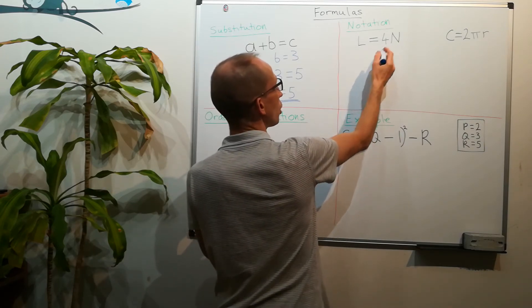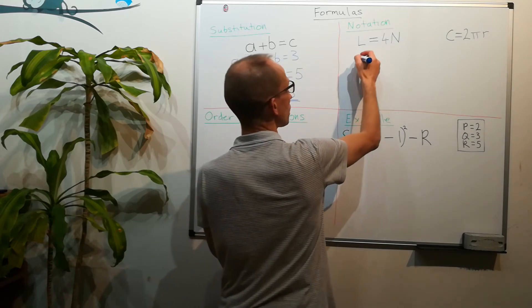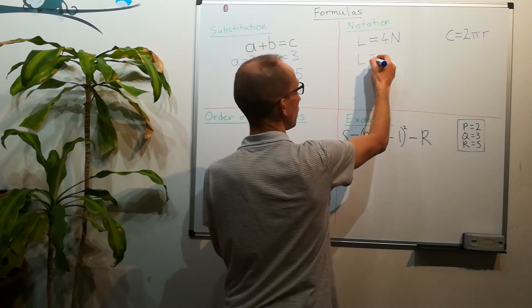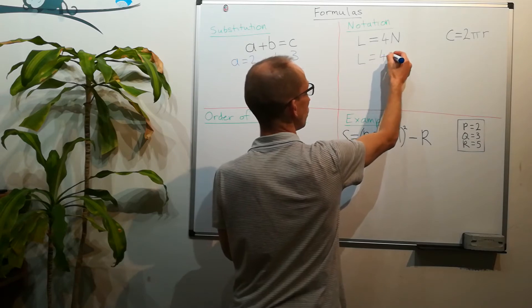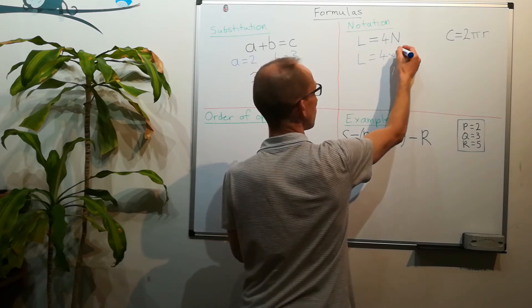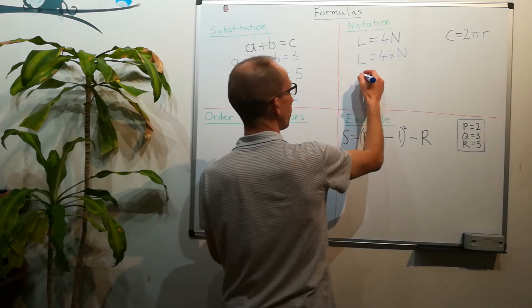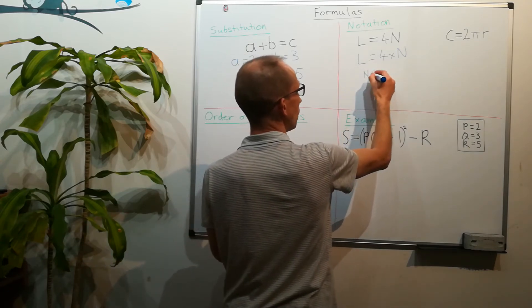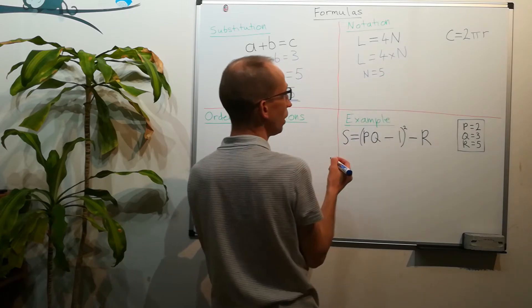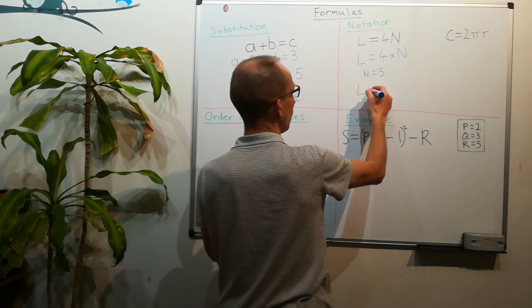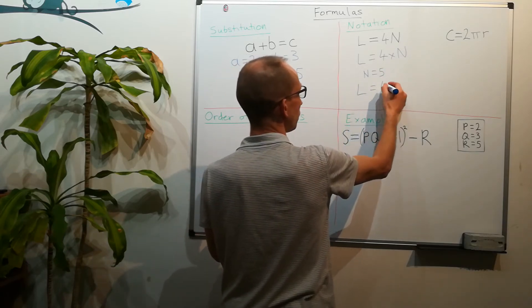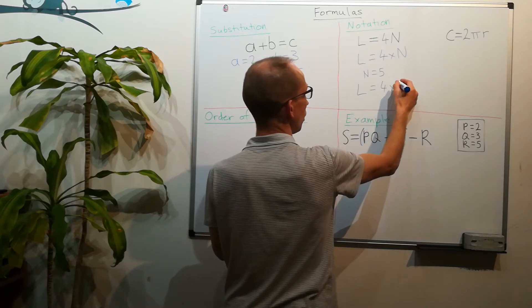So this actually means l is equal to 4 times whatever n is. And then if we're told that n equals 5, well then l is equal to 4 times 5, which is 20.